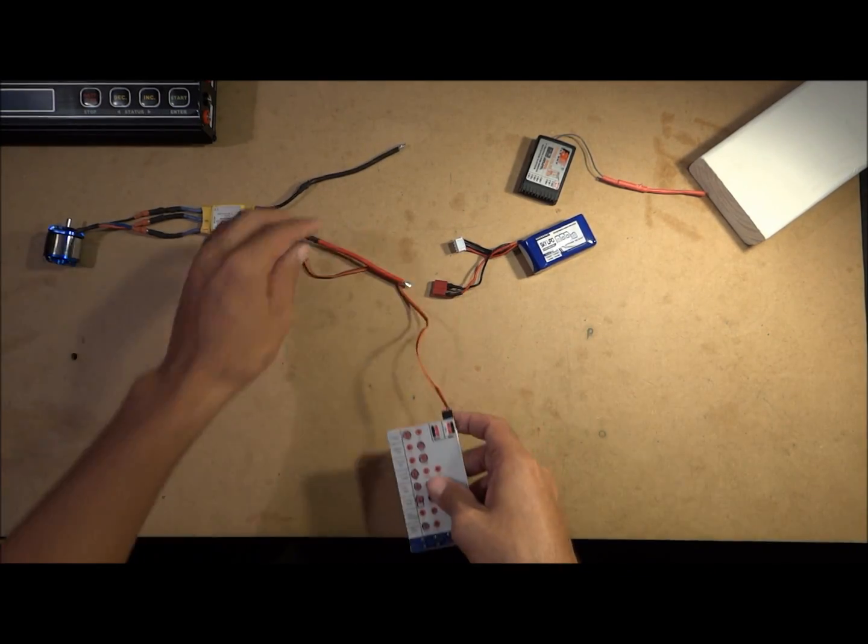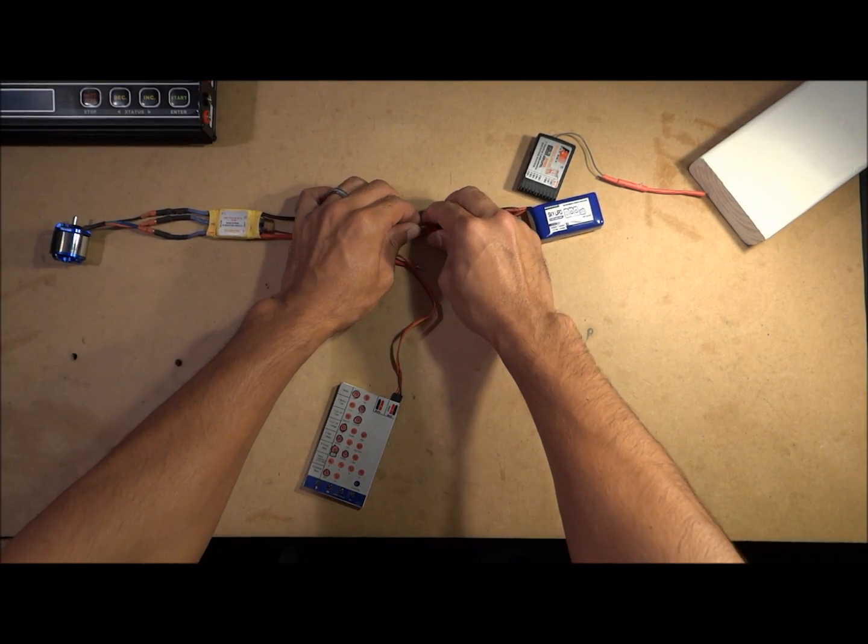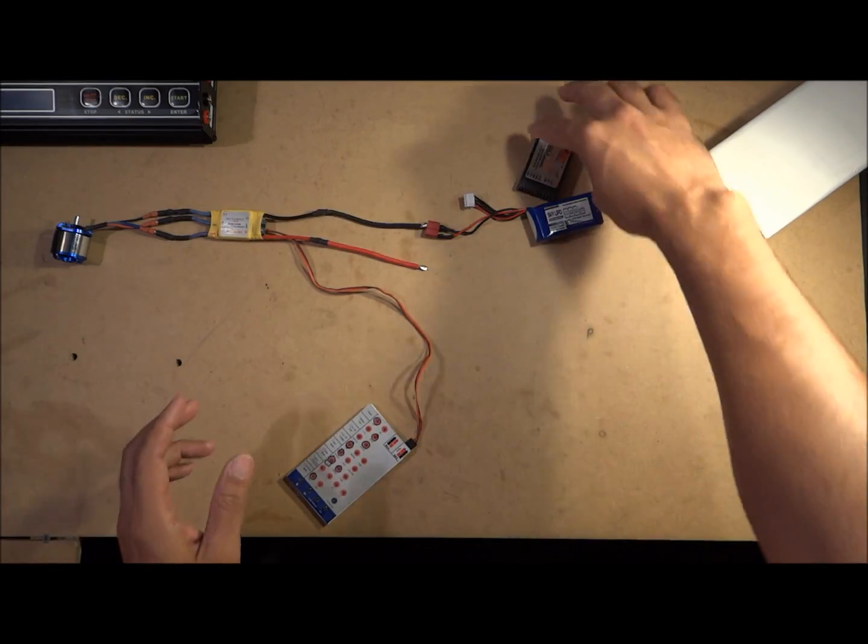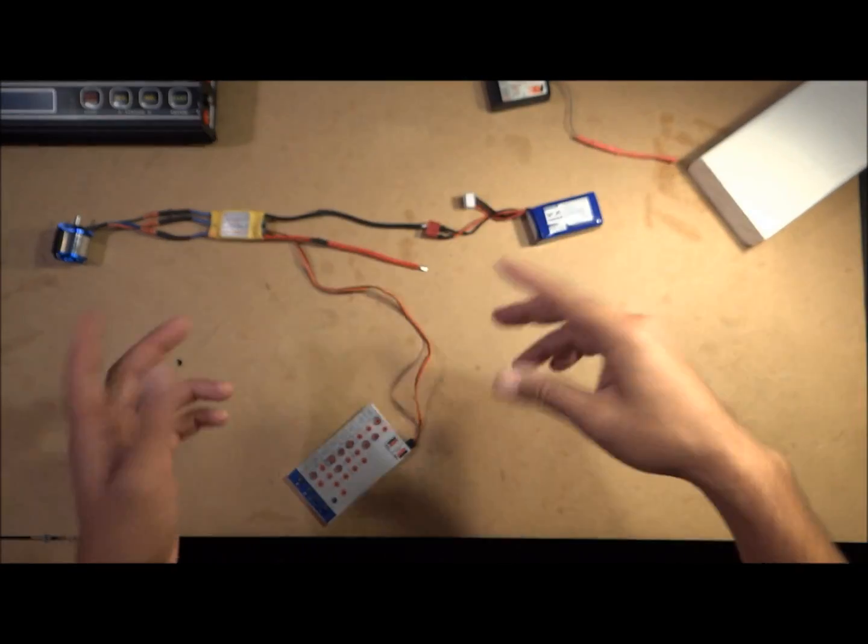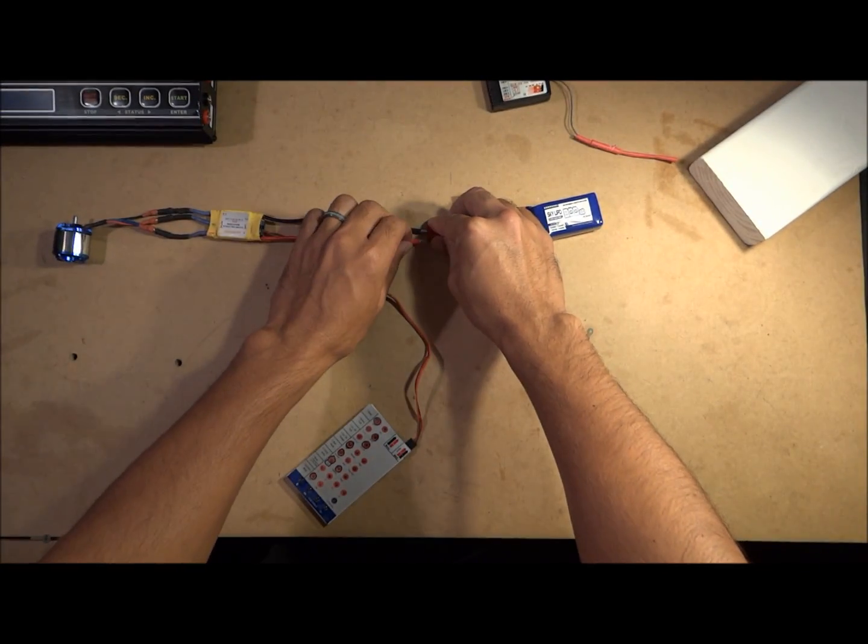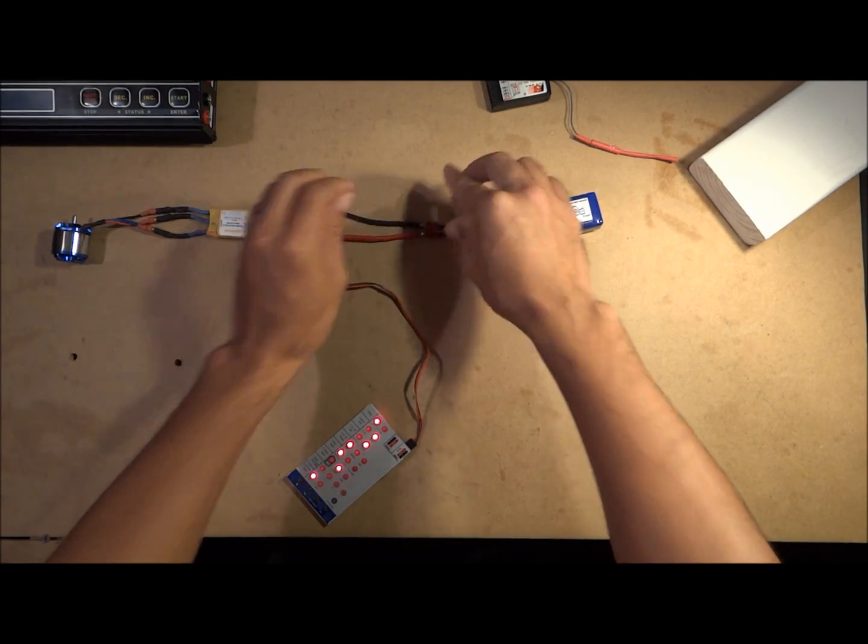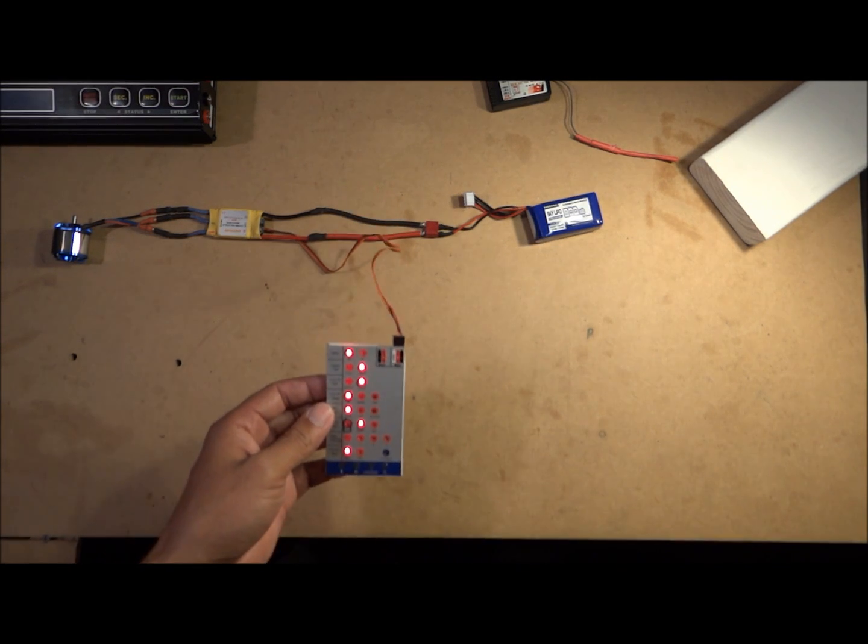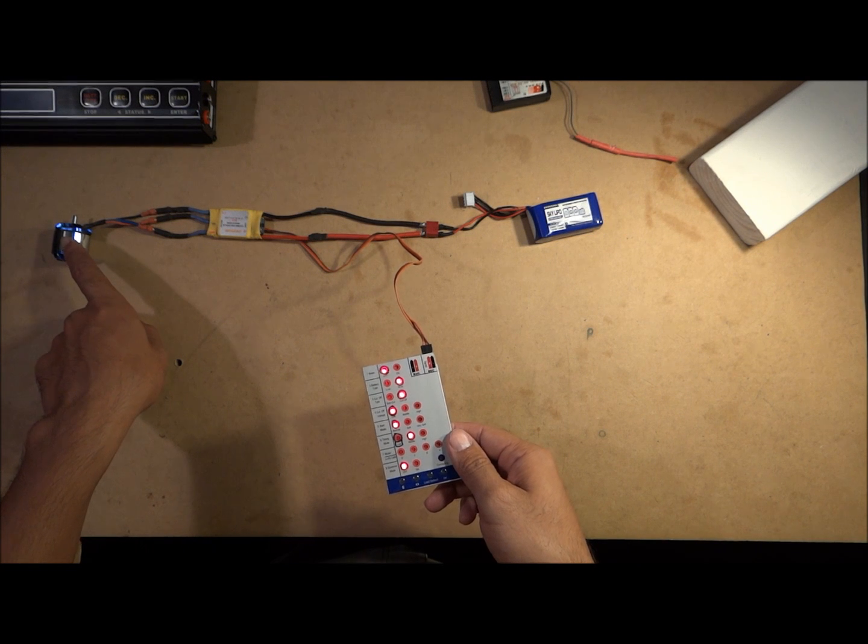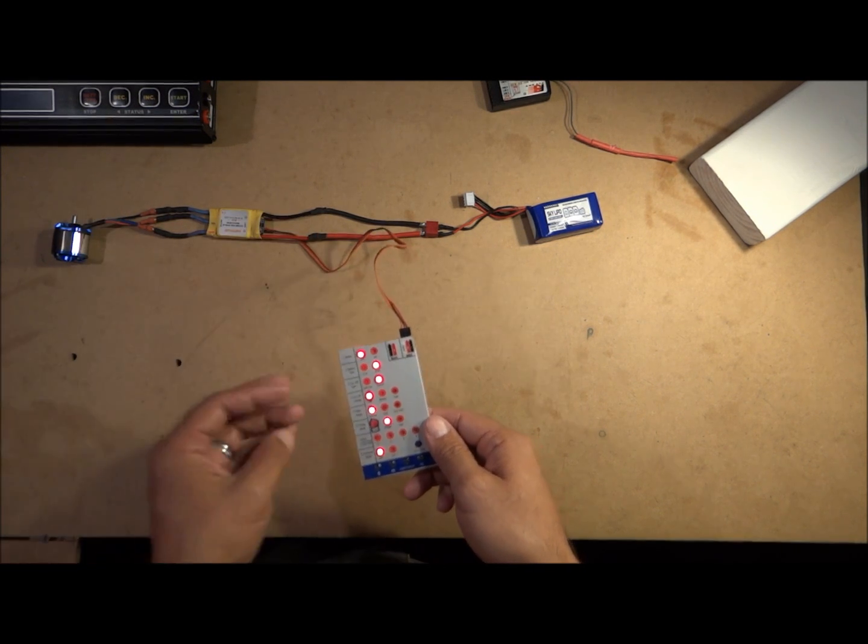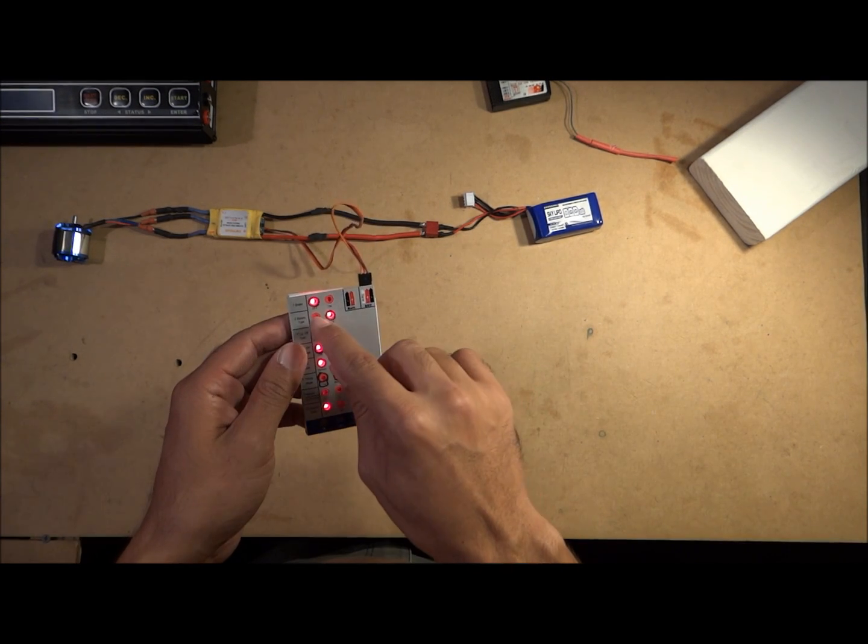Now that you have your ESC hooked up to your programming card, you're going to hook up your battery. You're not going to use your transmitter yet or anything like that - I'm going to show you that later on once you got the whole setup. And by the way, you'd want to plug in your motor that way you know when everything's powered up, it makes that little beep sound.